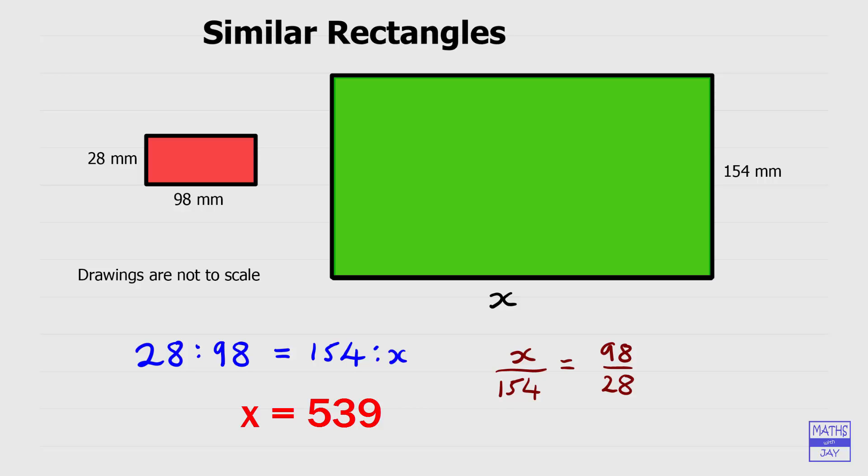To find x, we would just multiply both sides by 154. You can either cancel down the fraction 98 over 28 first, and it would be 7 over 2, or you could just leave all the numbers as they are. Multiplying 154 by 98 over 28 would give you the same answer as before.